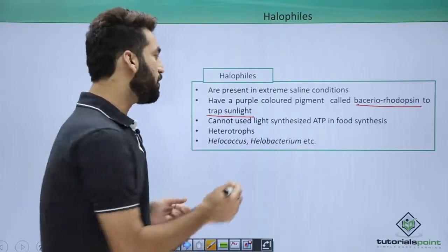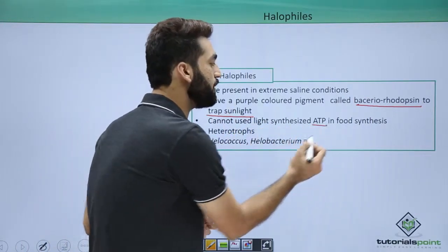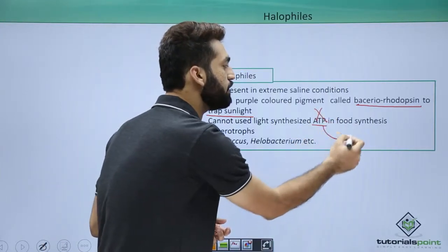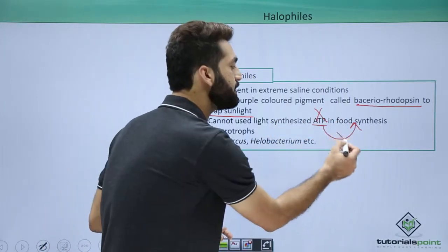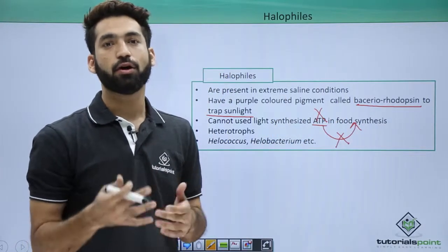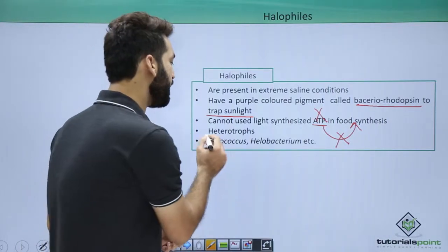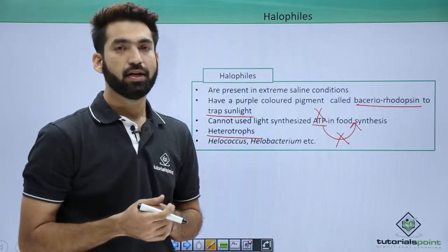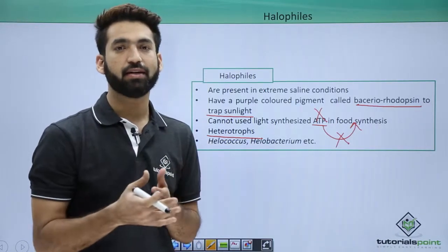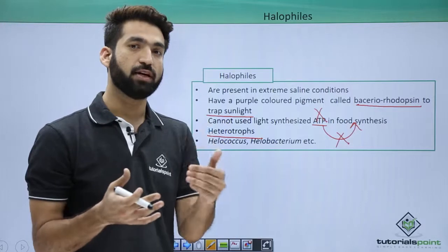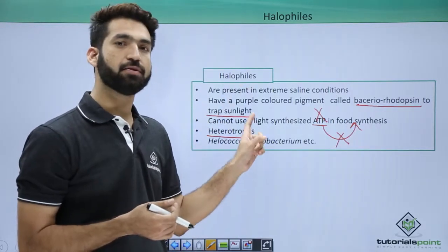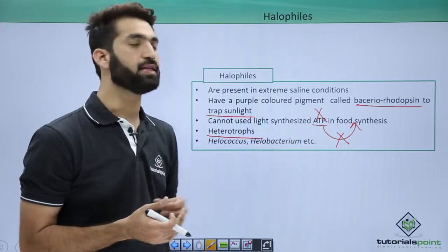When they trap sunlight, they can convert it to ATP, but they cannot utilize this ATP for food synthesis. So these archaebacteria are not autotrophs — they are heterotrophs. Remember that methanogens like methanococcus and methanobacterium were chemoautotrophs, but halophiles are heterotrophs because they cannot use sun-driven ATP for food synthesis.